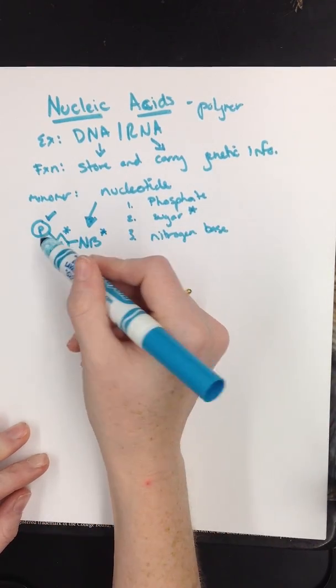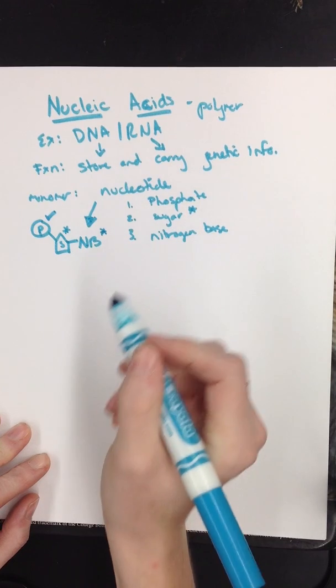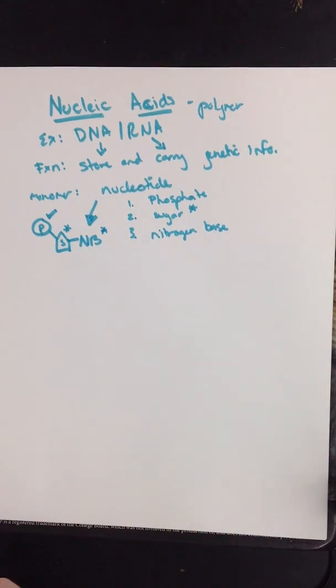But the phosphate always stays the same. It's always on the very outside, it's a really strong molecule, it helps keep the shape. That's pretty much what we need to know about nucleic acids right now.